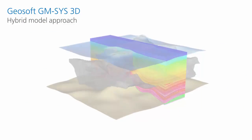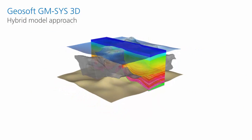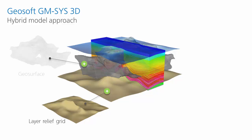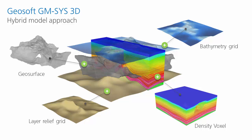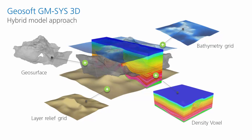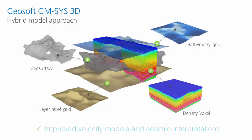GMSYS 3D applies GeoSoft's unique hybrid approach to modeling. This hybrid approach incorporates grids, geosurfaces, and 3D voxels in the same model to create a more detailed and accurate representation of structure than traditional modeling methods. The results are improved velocity models and seismic interpretations.